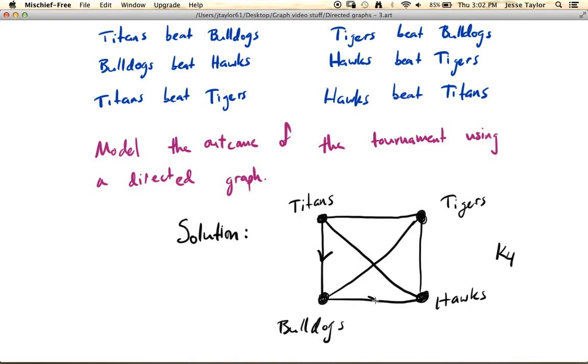Similarly, the Bulldogs beat the Hawks, and the Titans beat the Tigers, and the Tigers beat the Bulldogs. And the Hawks beat the Tigers, and the Hawks beat the Titans. So this is how you might model the situation in this problem using a directed graph.